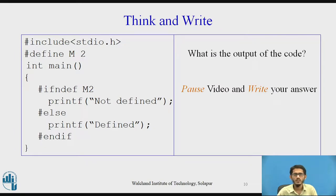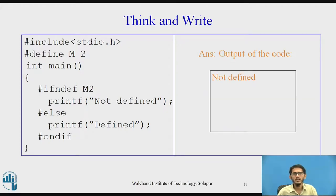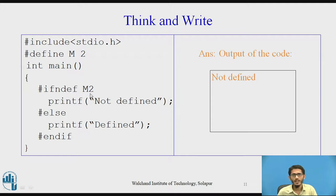A question for students: pause the video and write your answer. The answer is that the output of the code is 'not defined'. This is because in the program a macro named 'm' is defined with expansion 2, but inside main we check #ifndef m2 — 'm2' is a different macro. Since macro 'm2' is not defined in the program, #ifndef m2 evaluates to true, so the output is 'not defined'.